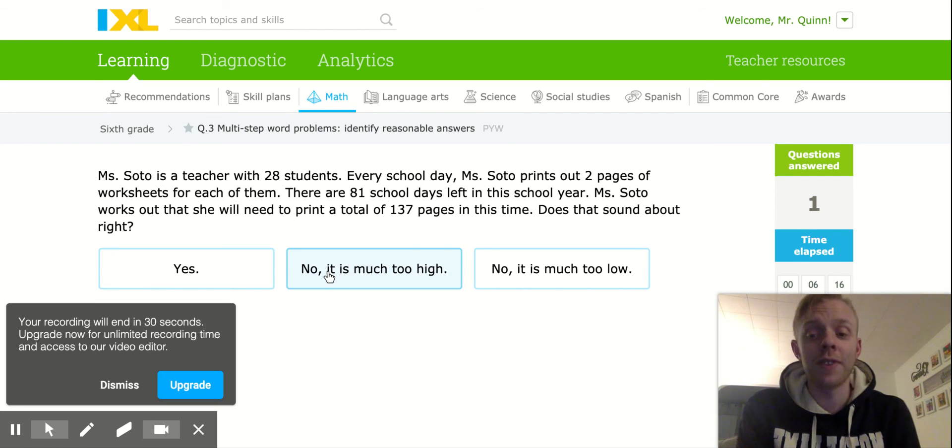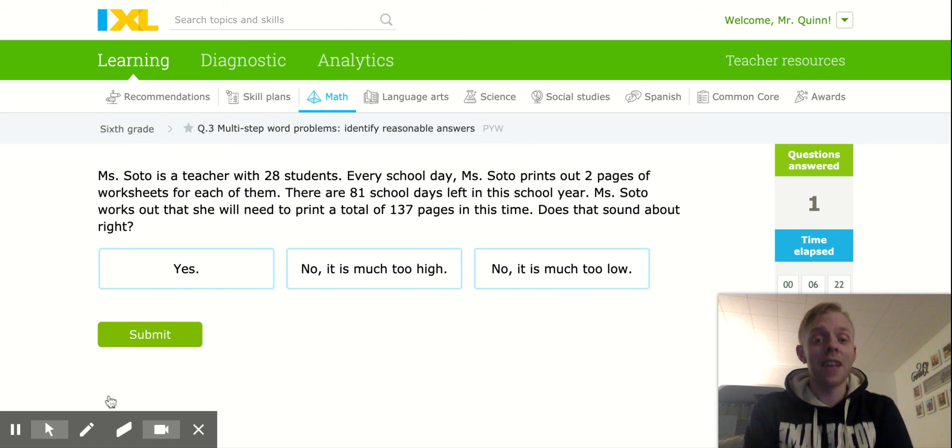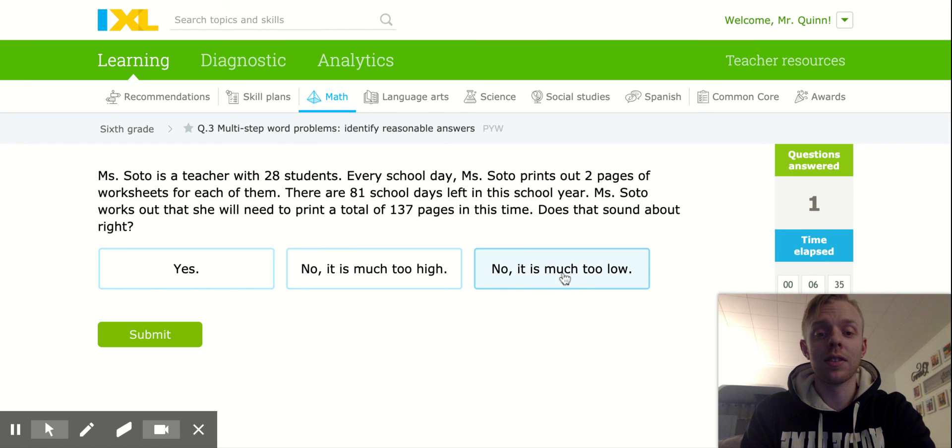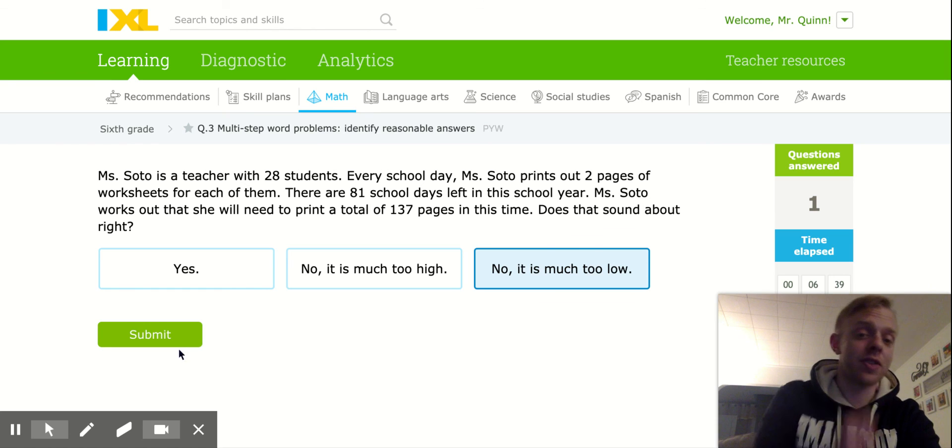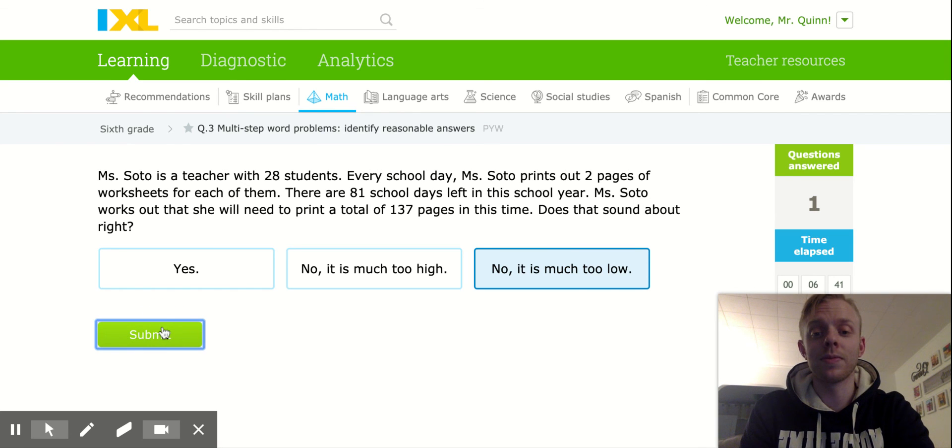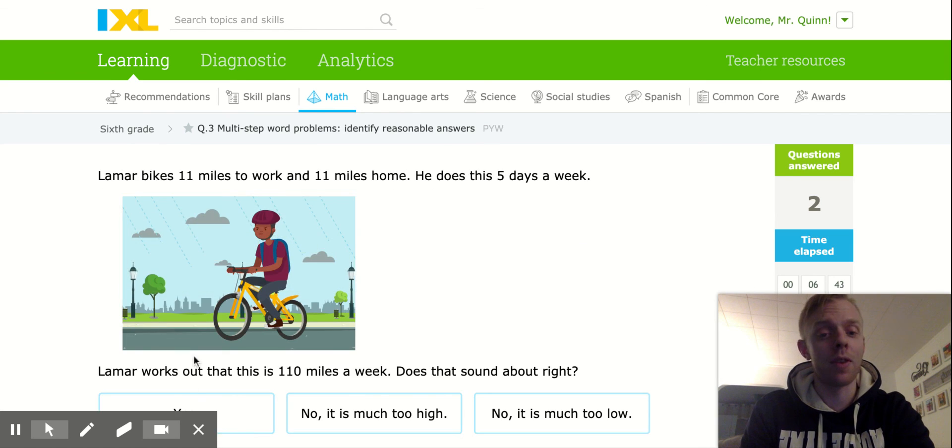If she does 56 pages every day, that is not going to make sense. If there's 81 days of school left, type it in your calculator. 56 times 81. It is going to be way, way, way too big. So her answer is too low. Got that one right. Great job, everybody.